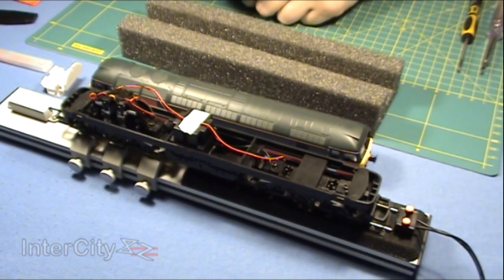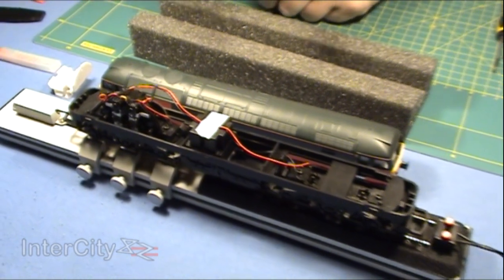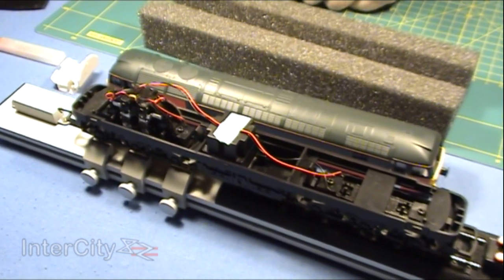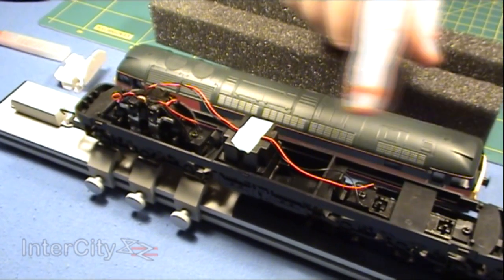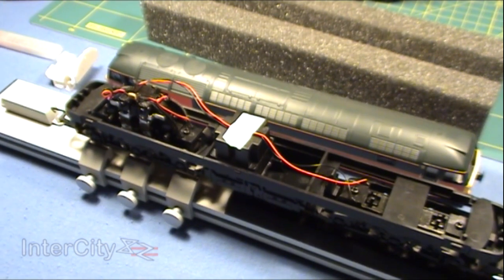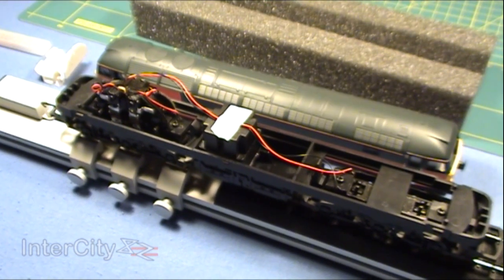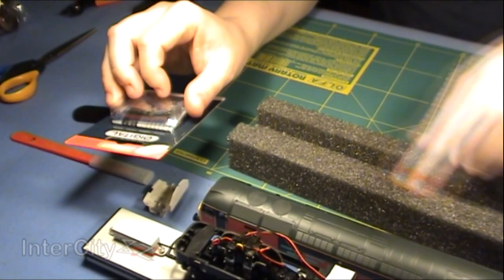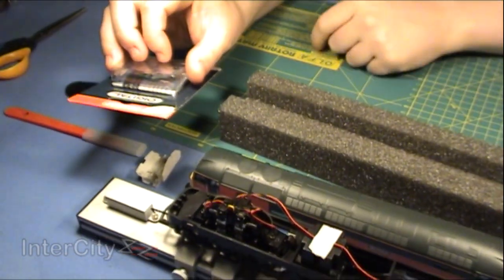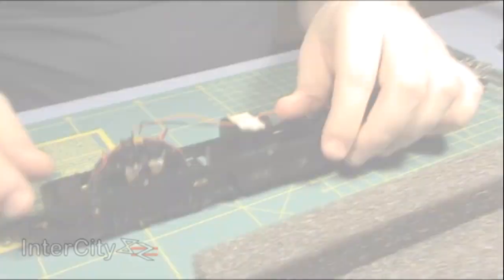If we want to DCC the locomotive, we have to interrupt that power supply so that rather than power going straight to and from the motor, it goes to the chip and then from the chip into the motor unit.